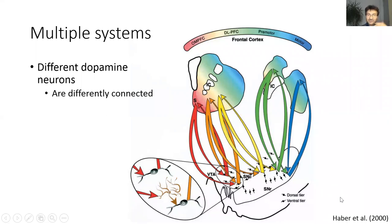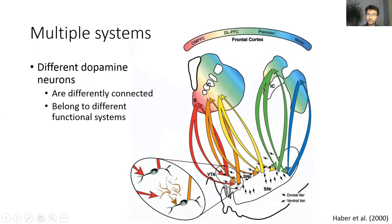This figure from Susan Haber indicates that different dopaminergic neurons are connected with different functional systems. I will follow the color convention in this figure throughout my talk, denoting neurons in more reward-related areas in red or warm colors, and neurons in more motor areas in cold colors.